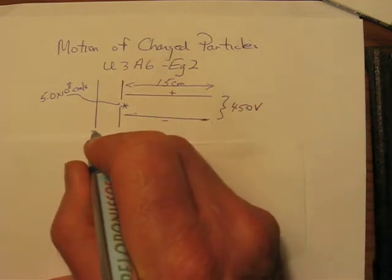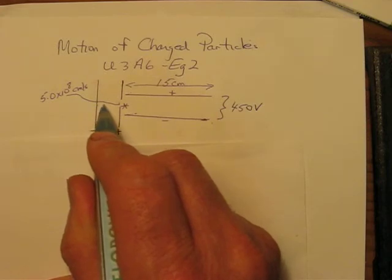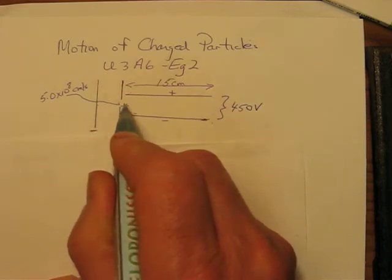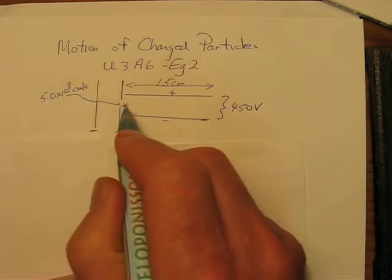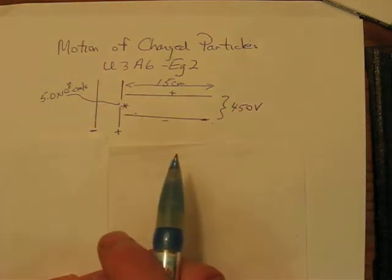Well, probably this plate was negative and this one was positive and it was accelerated across here and maybe gained this speed as it entered these other plates here, which we often refer to as deflecting plates.